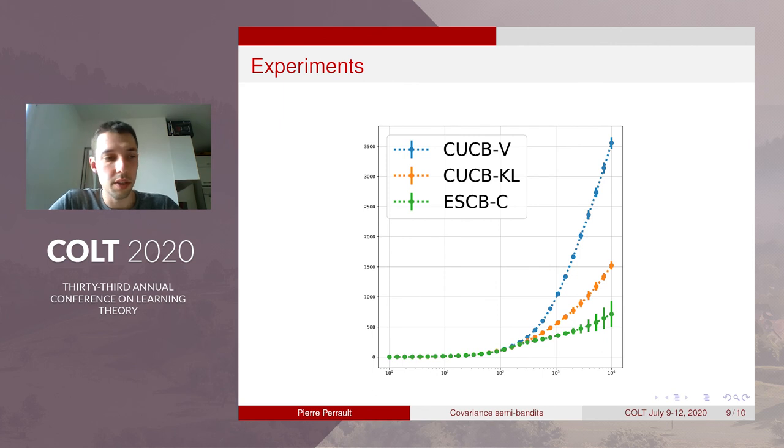Notice that we did not compare to OLS-UCB of Degenne and Perchet because their implementation is inefficient to apply with a lot of combinatorial actions. Notice that our approach is also inefficient but we provide in the paper an efficient implementation that only brings a logarithmic factor in the regret. So this experiment shows our algorithm with this implementation.